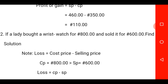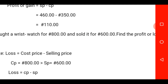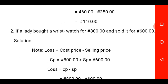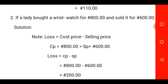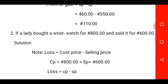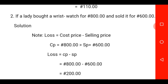Question two now. If a lady bought a rich wash for 800 naira and sold it for 600 naira, find the profit or loss. You are to apply the formula here. The formula for calculating loss is equal to cost price minus selling price. I repeat: the formula for calculating loss is equal to cost price minus selling price. If you check the question, you will discover that your cost price is greater than your selling price, which means you are to calculate loss.